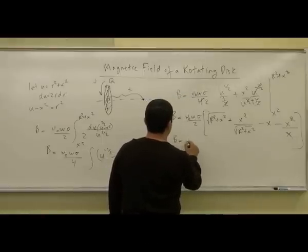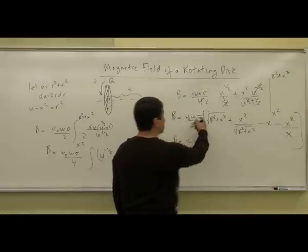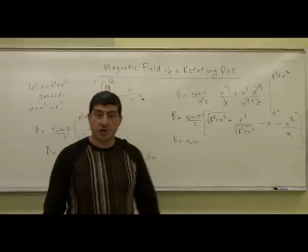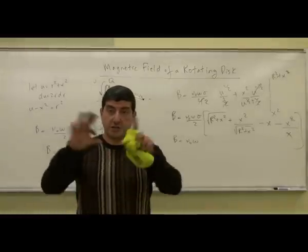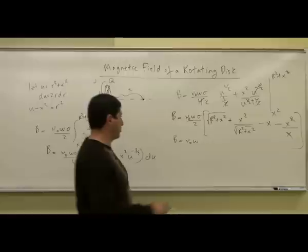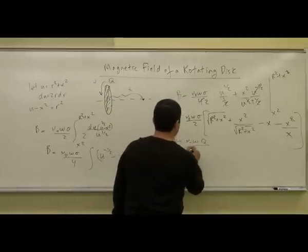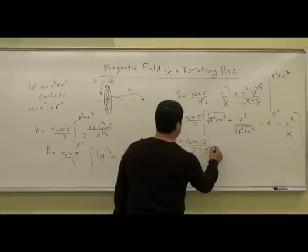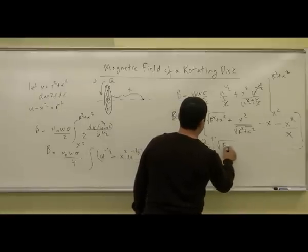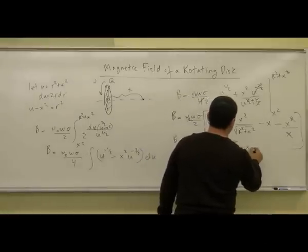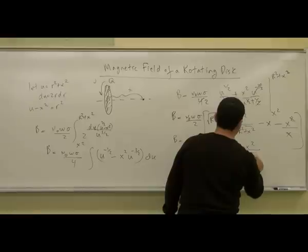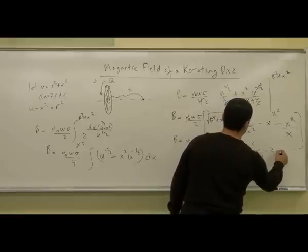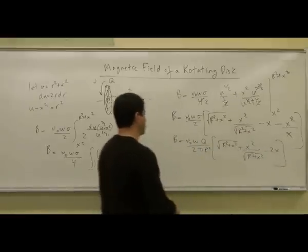The final result is B = (μ₀ωσ / 2) · [√(R² + X²) + X²/√(R² + X²) − 2X], where σ = Q / (πR²) is the total charge divided by the surface area of the disc.